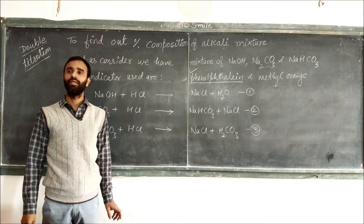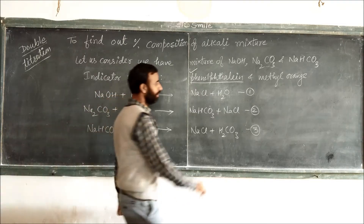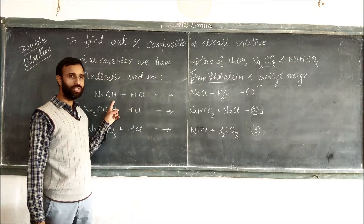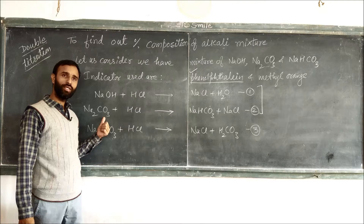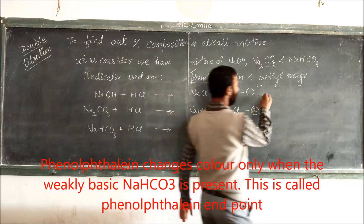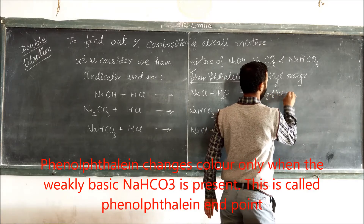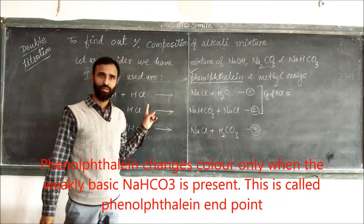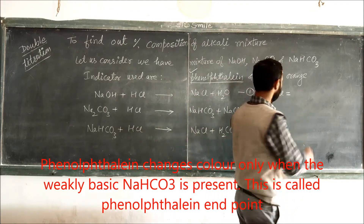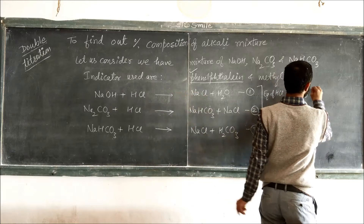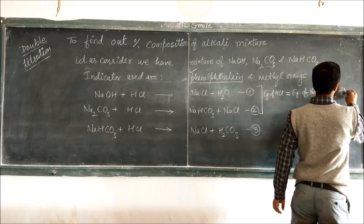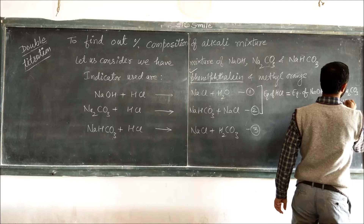The phenolphthalein indicator shows its color change when the first two reactions are complete — meaning NaOH is fully neutralized and sodium carbonate is fully converted to sodium hydrogen carbonate. So the equivalence of HCl used up to the phenolphthalein stage equals the equivalence of NaOH plus the equivalence of sodium carbonate with valency factor 1.